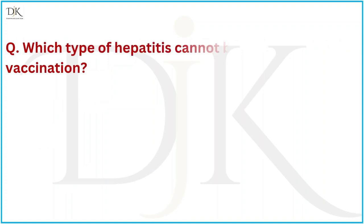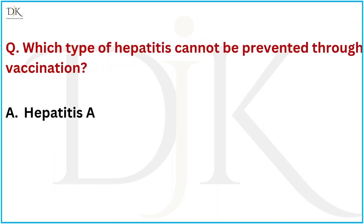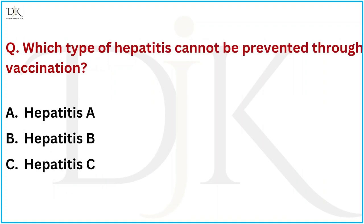Which type of Hepatitis cannot be prevented through vaccination? The right answer is Hepatitis C.